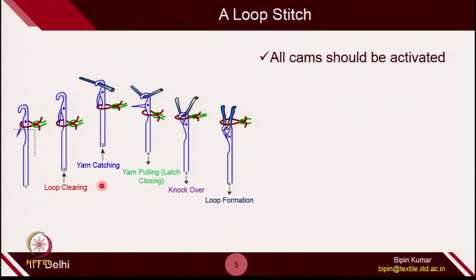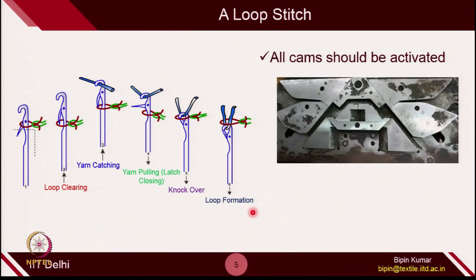To create a loop stitch, the needle should hit the rise cam, then the clearing cam, at which point the old loop is cleared. While descending, it catches the yarn, pulls the yarn, hits the stitch cam, and in this way creates the loop stitch. If you see the notation — in subsequent lectures, more complicated knitting structures will come, so we need notation systems to describe them rather than always drawing loops.